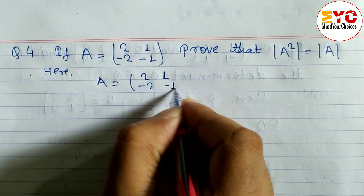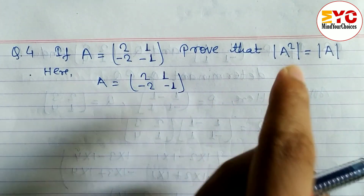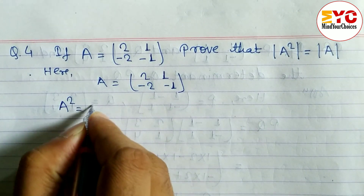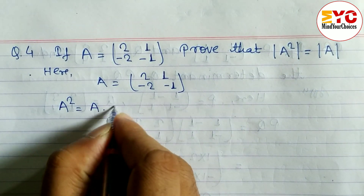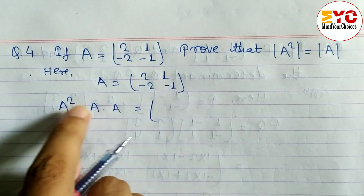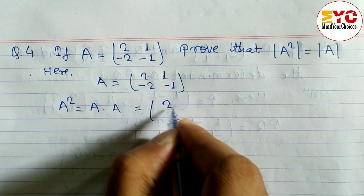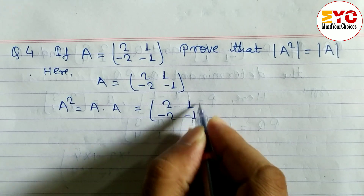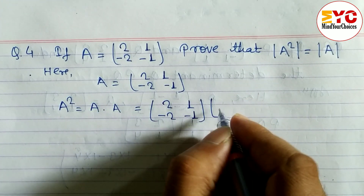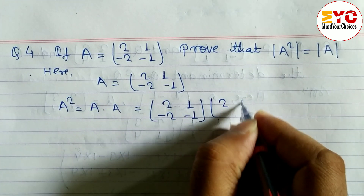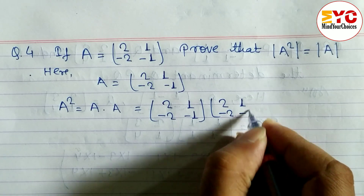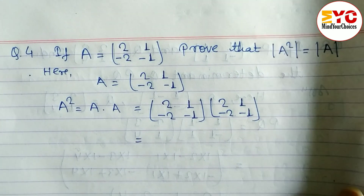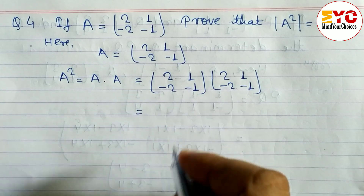Matrix A is equal to [[2, 1], [-2, -1]]. First of all we have to find A squared. A squared means A into A. So we write matrix A as [[2, 1], [-2, -1]] multiplied by another matrix A which is [[2, 1], [-2, -1]].